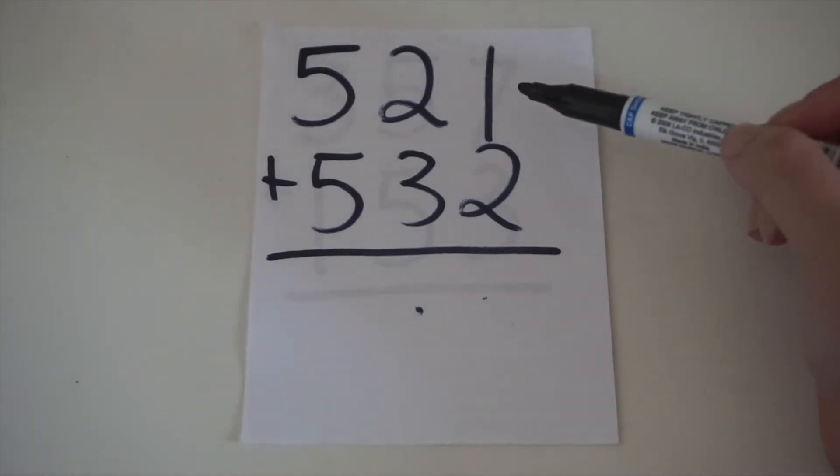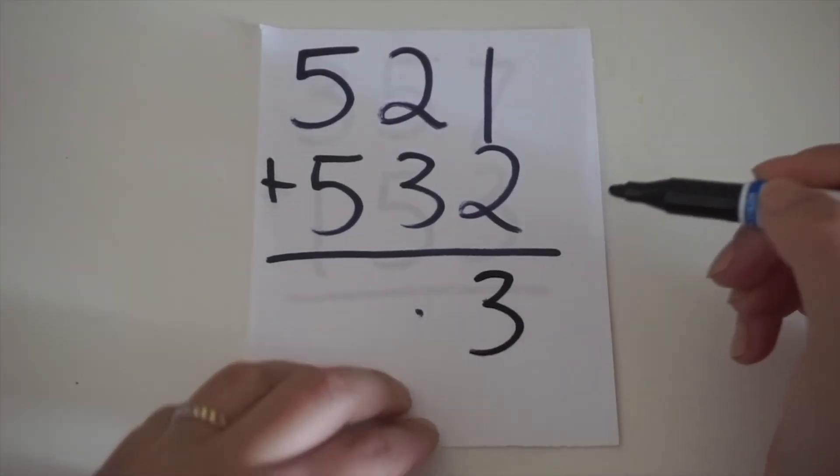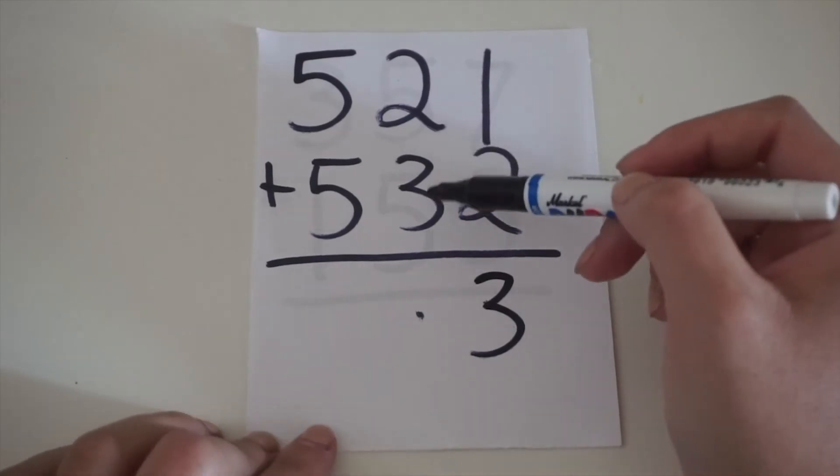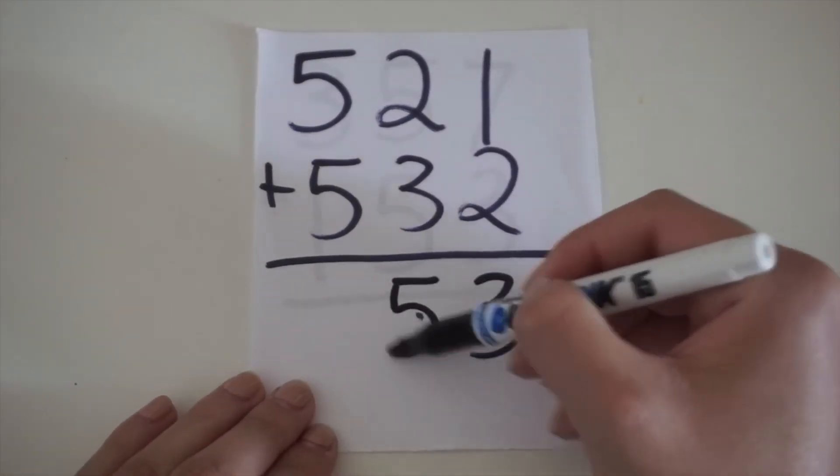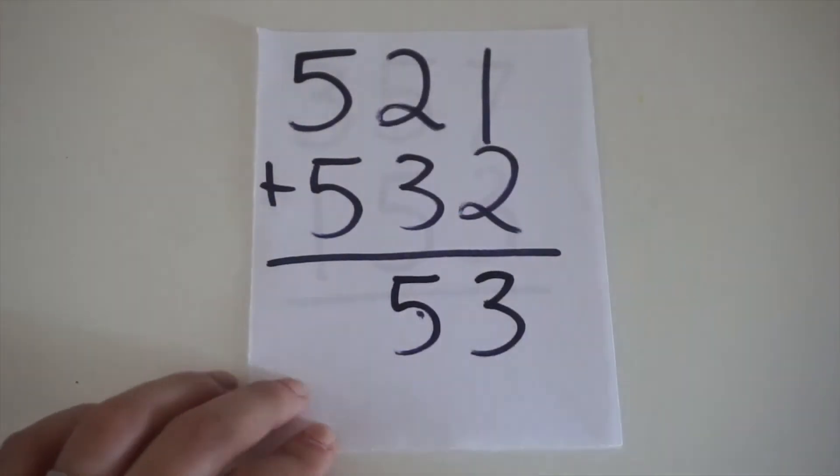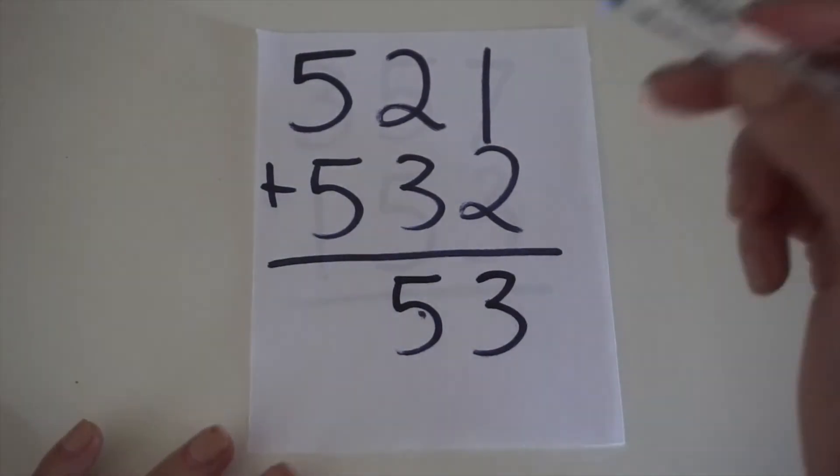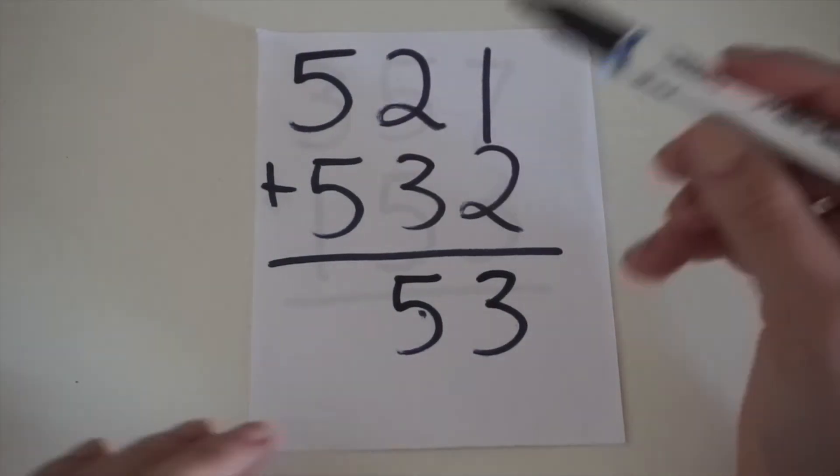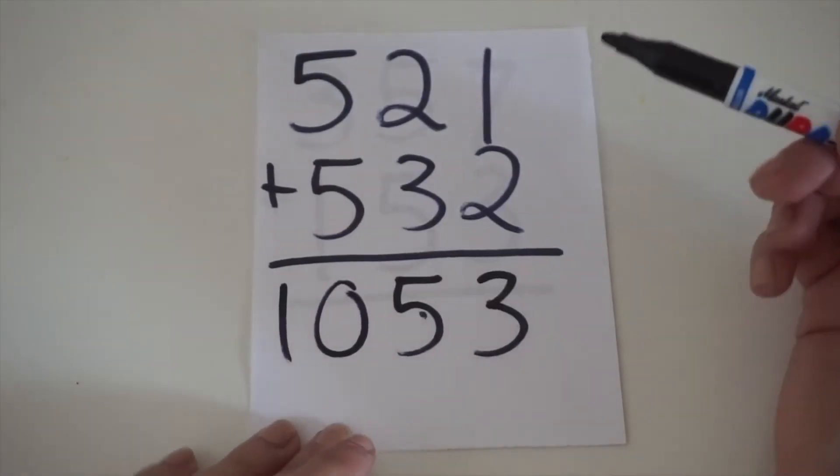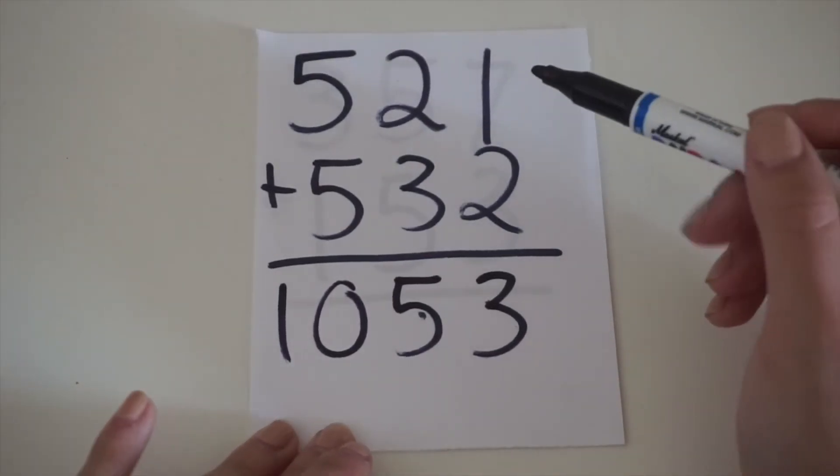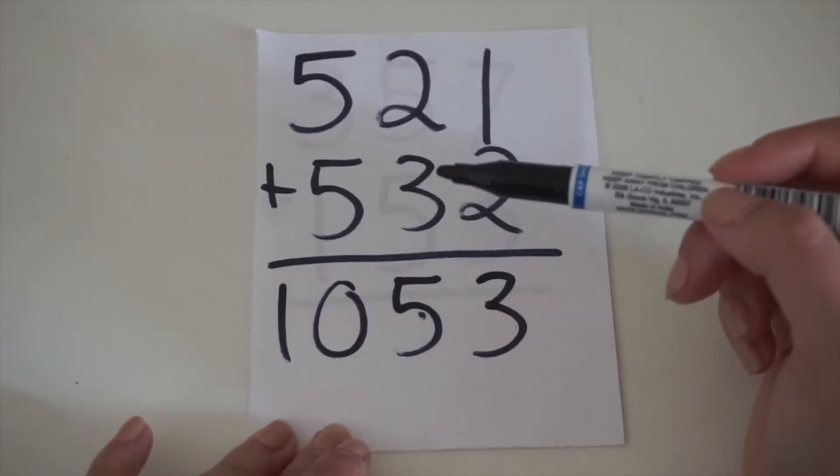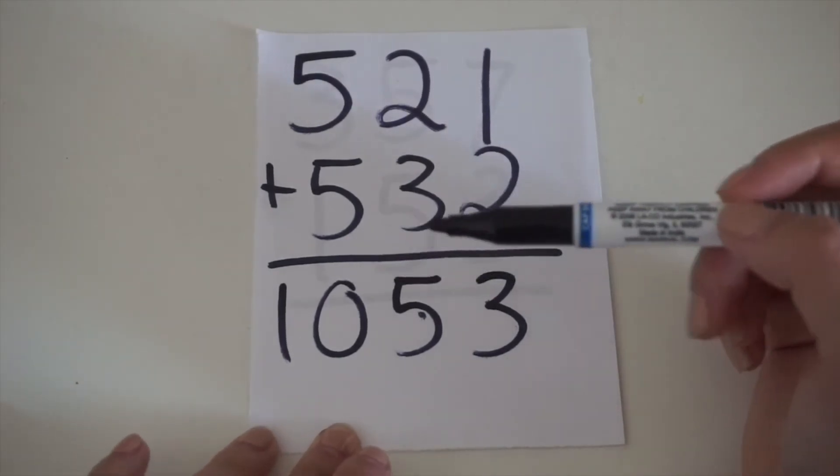Now we have 1 plus 2 equals 3, 2 plus 3 equals 5, and 5 plus 5 equals 10. So, again, when you get a double digit number on your left side, you will just bring the number down. So, 521 plus 532 equals 1053.